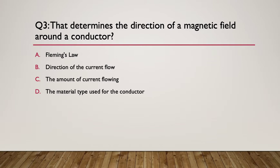Question three. What determines the direction of a magnetic field around a conductor? So a thing called Fleming's law, direction of the current flow, the amount of current flowing, or the material type used for the conductor. So pause here. Here's your hint. What is the right hand rule all about? Do you remember the right hand rule? What's that all about? So here's the answer. It's the direction of the current flow. So what determines the direction of a magnetic field? It's directly related to the direction of the current.